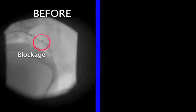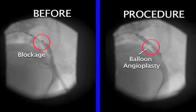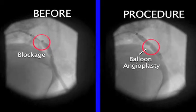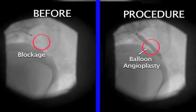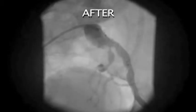If you look now to the left, you'll see a before picture where a balloon angioplasty is going to be performed at the site of the blockage, and then afterwards you'll see that the dye now flows freely through the area, relieving the blockage.